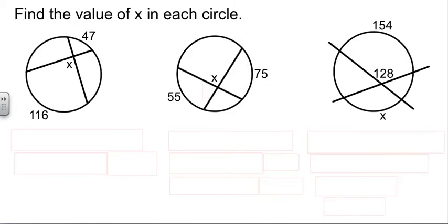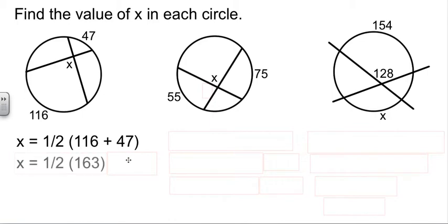Let's find the value of a few angles here. If we want to find the measure of angle X here, that's going to be equal to half of this one and this one. So X is going to be half of 116 plus 47, that's half of 163, which is 81 and a half.